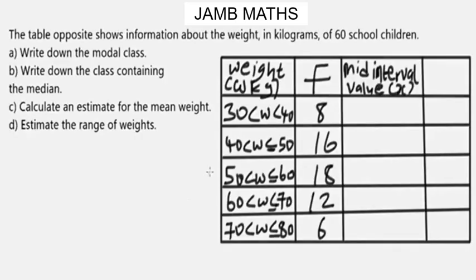Now let's look at this grouped frequency table statistics question. The question says: the table shown here gives information about the weight in kilograms of 60 school children. We need to: write down the modal class, write down the class containing the median, calculate an estimate for the mean weight, and estimate the range of weights.